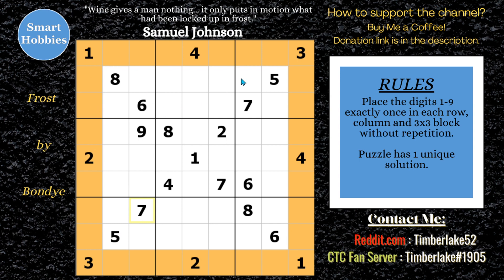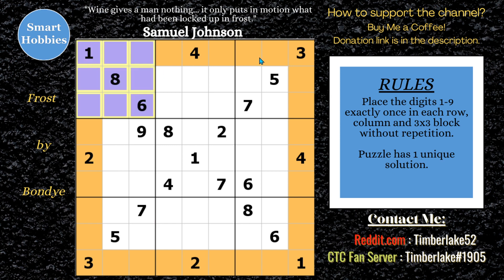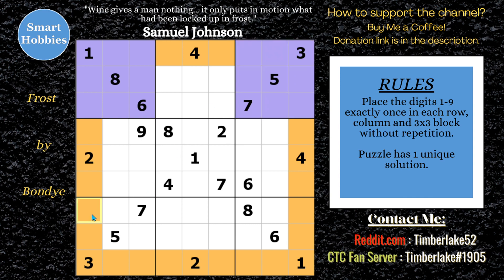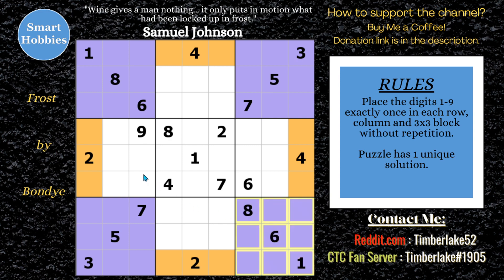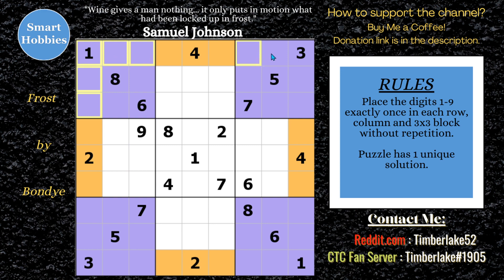Now let's look inside blocks 1, 3, 7, and 9, and what's remaining in the white. Those are digits 5, 6, 7, and 8. So what we can do here is cover up blocks 1, 3, 7, and 9. Now we're looking at two different sets — the purple and the orange — and I'm going to get rid of the overlap of the digits 1 through 9.